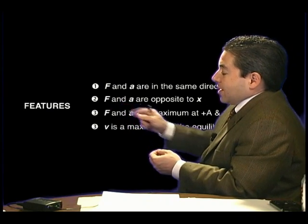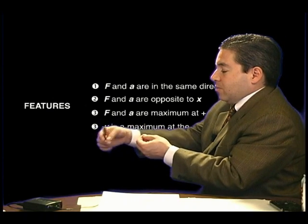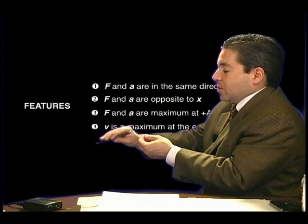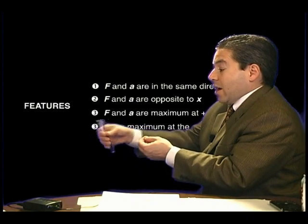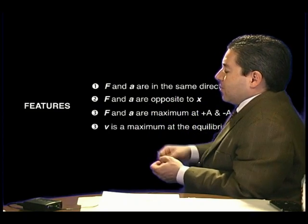Notice that the force and acceleration are opposite to the displacement. If you pull it out here, the force is pulling it back towards the equilibrium position, but notice you pulled it away from the equilibrium position. So the force and acceleration are opposite to the displacement vector.